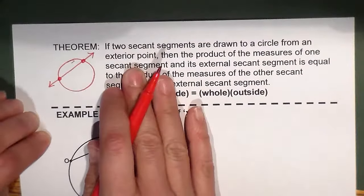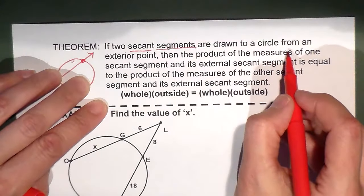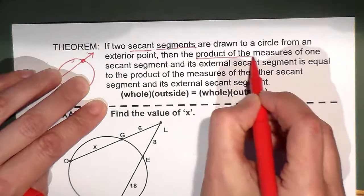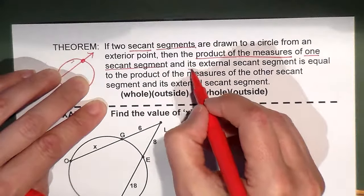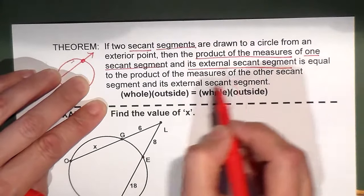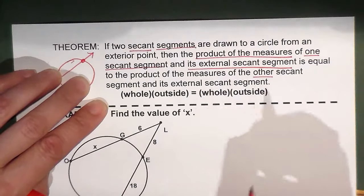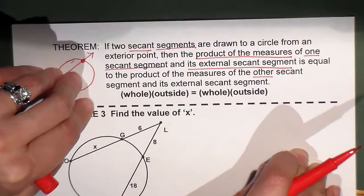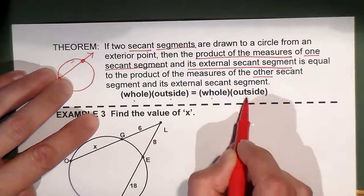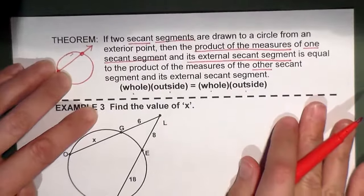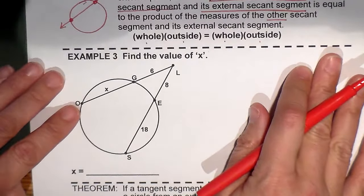So let's look at this theorem. If two secant segments are drawn to a circle from an exterior point, the product of the measures of one secant segment and its external secant segment is equal to the product of the measures of the other secant segment and its external. Now to shorten this up a little bit, that means whole times outside equals whole times outside. So let's look at this here using that idea.